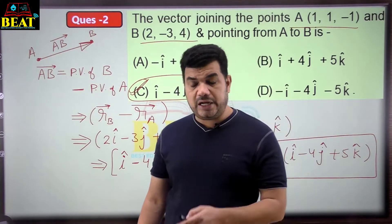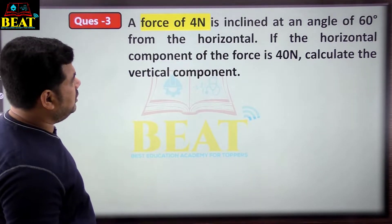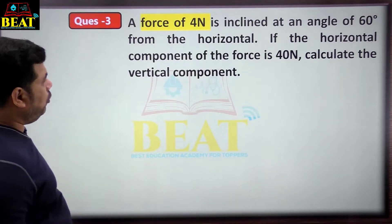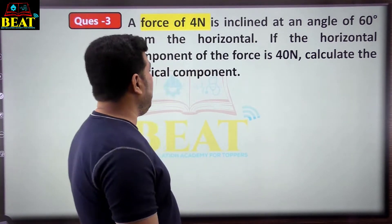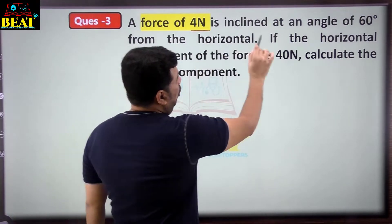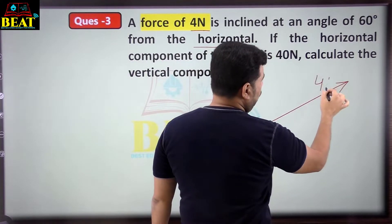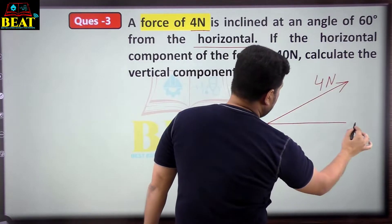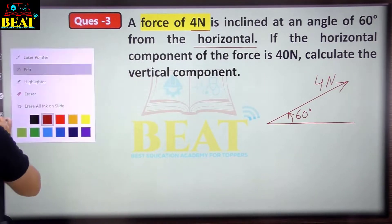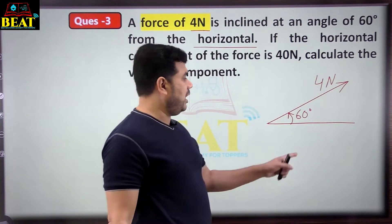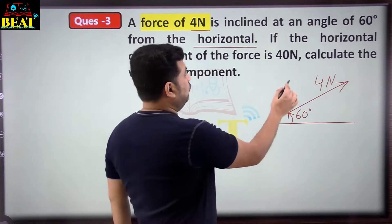Let's move to the next question. 4 Newton inclined at 60 degrees from the horizontal. If the horizontal component of the force — notice carefully — the same component asked differently. There is a 4 Newton force at 60 degrees from the horizontal, so we draw the force and place 60 degrees from horizontal.